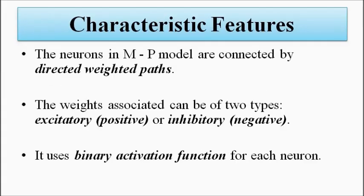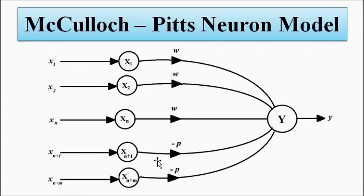All the neurons in this MP model are connected by direct weighted parts. Now as you can notice here from x1 to xn, the weights associated with these connections is given by w, positive weight w, and they are all equal.